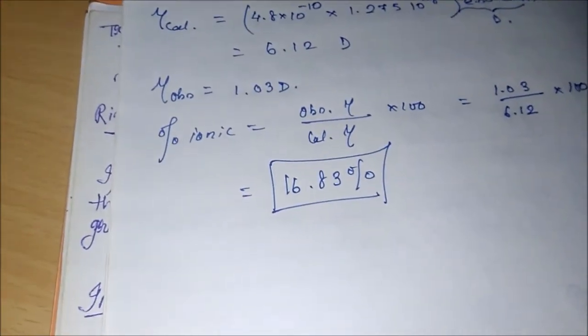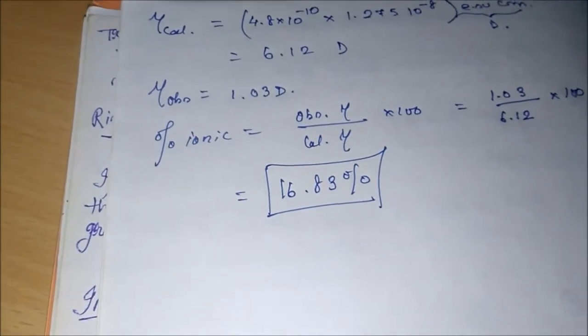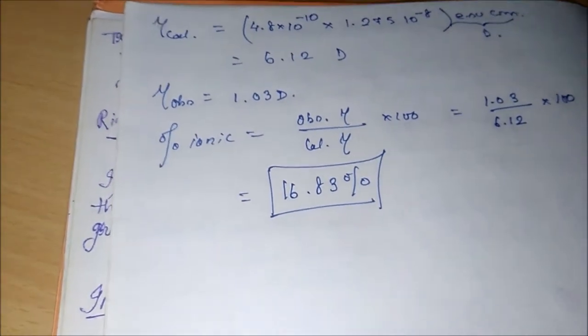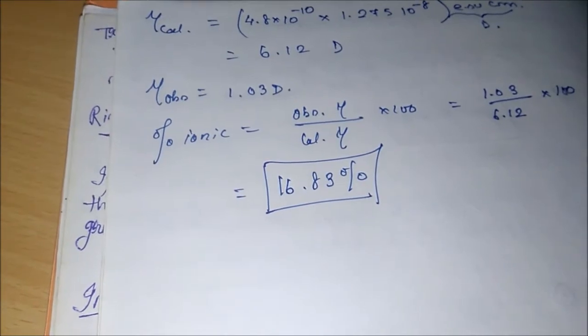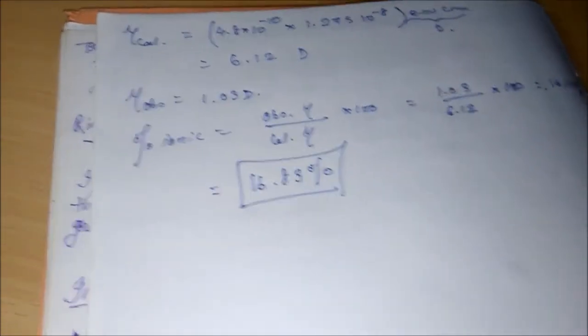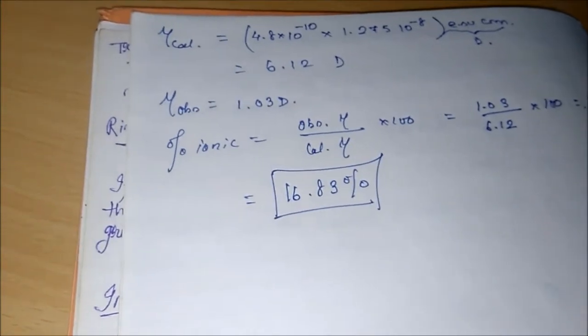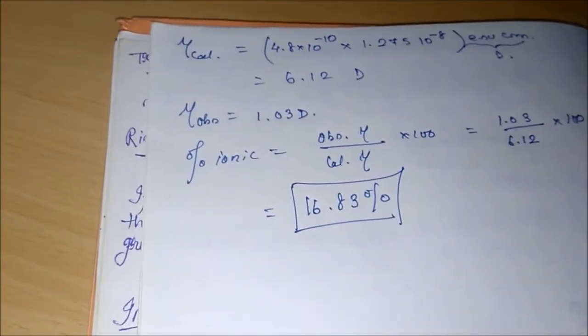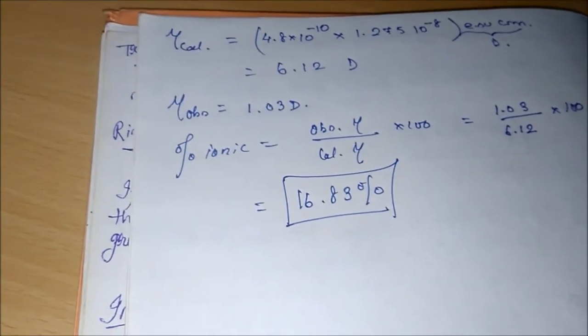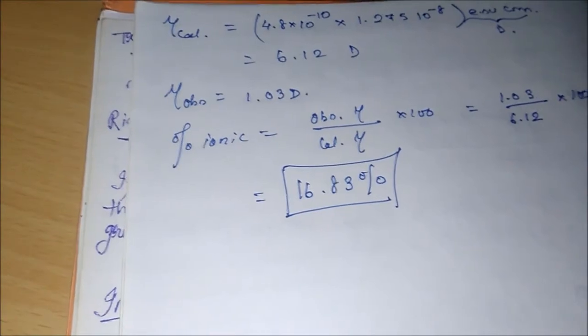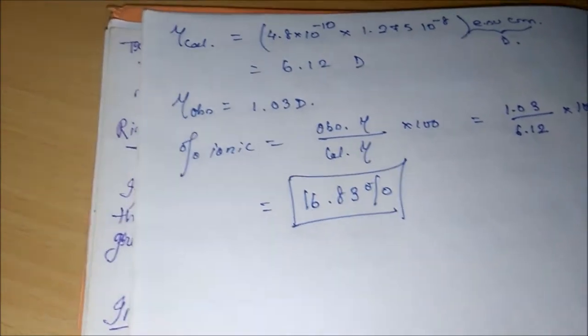So the steps to calculate percentage ionic character: first of all, use the concept that let us say that the entire molecule is 100% ionic. Then move from there, and you have to know that how many electrons are being played here. For each electron, 1.602 × 10^-19 coulomb charge should be used. Use that value, calculate the calculated μ.